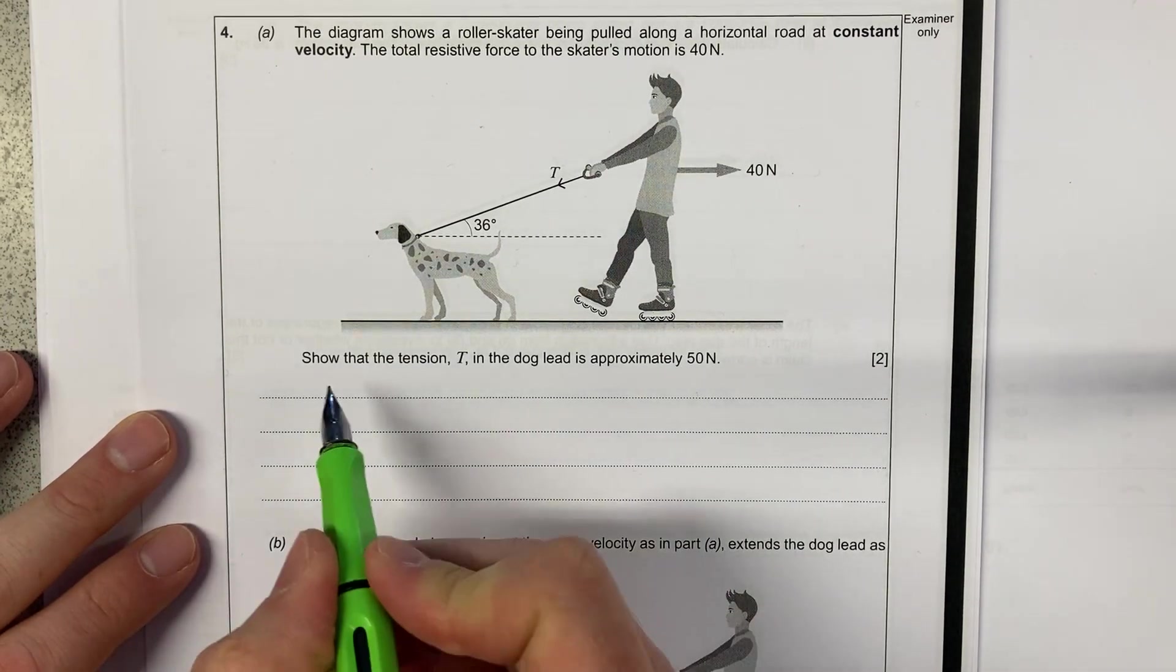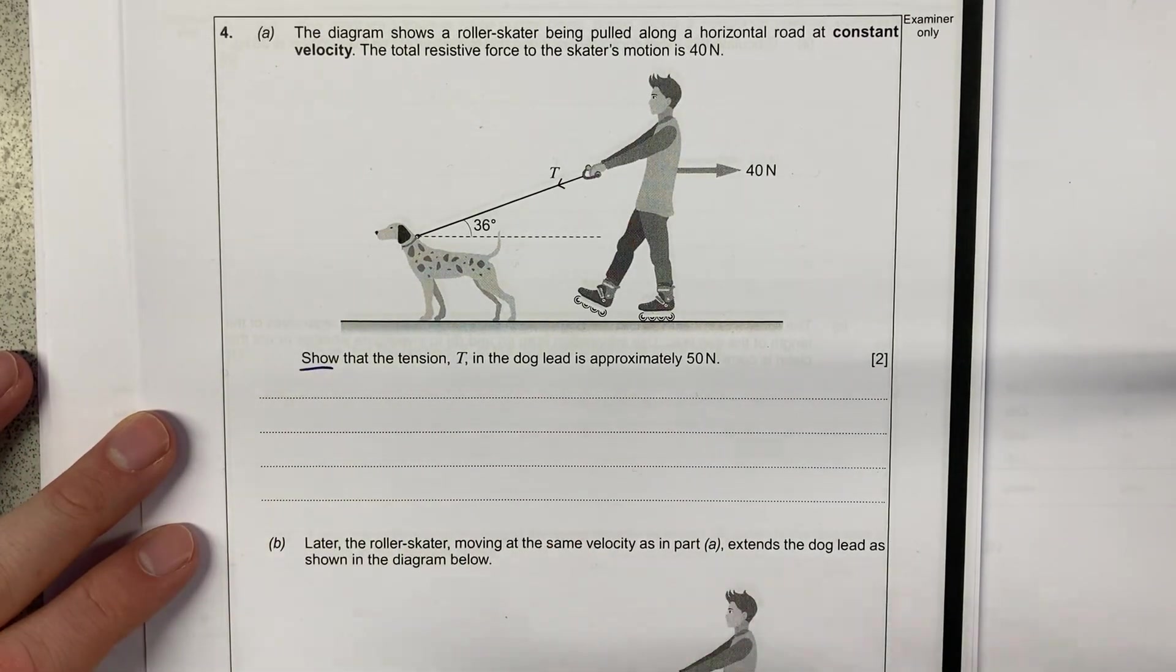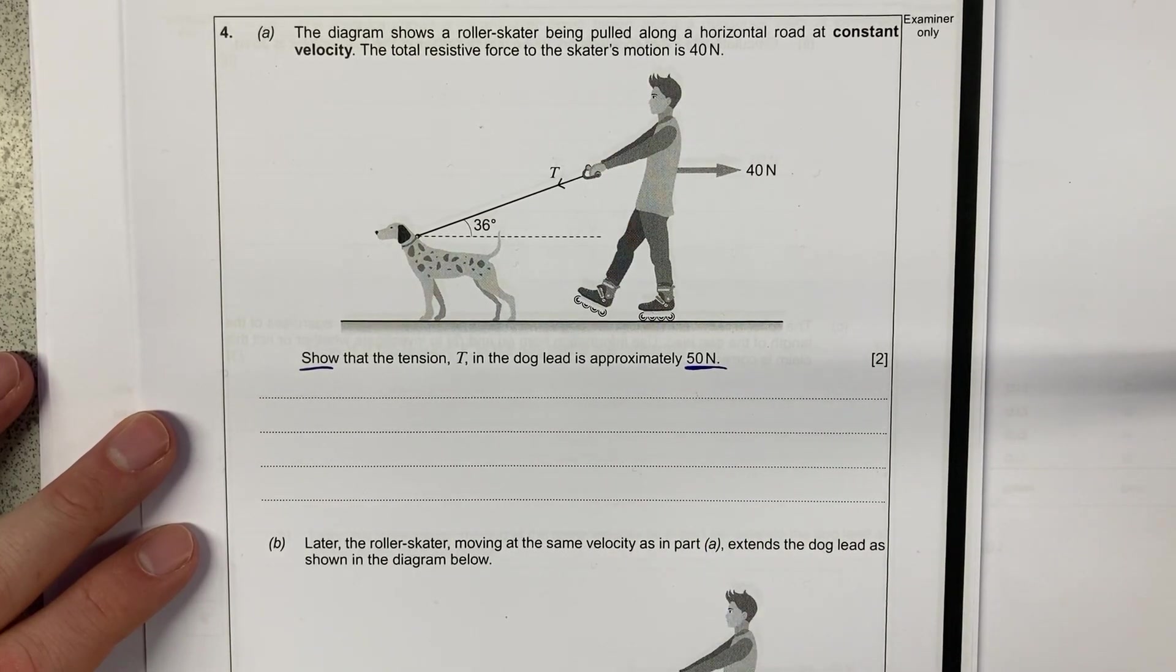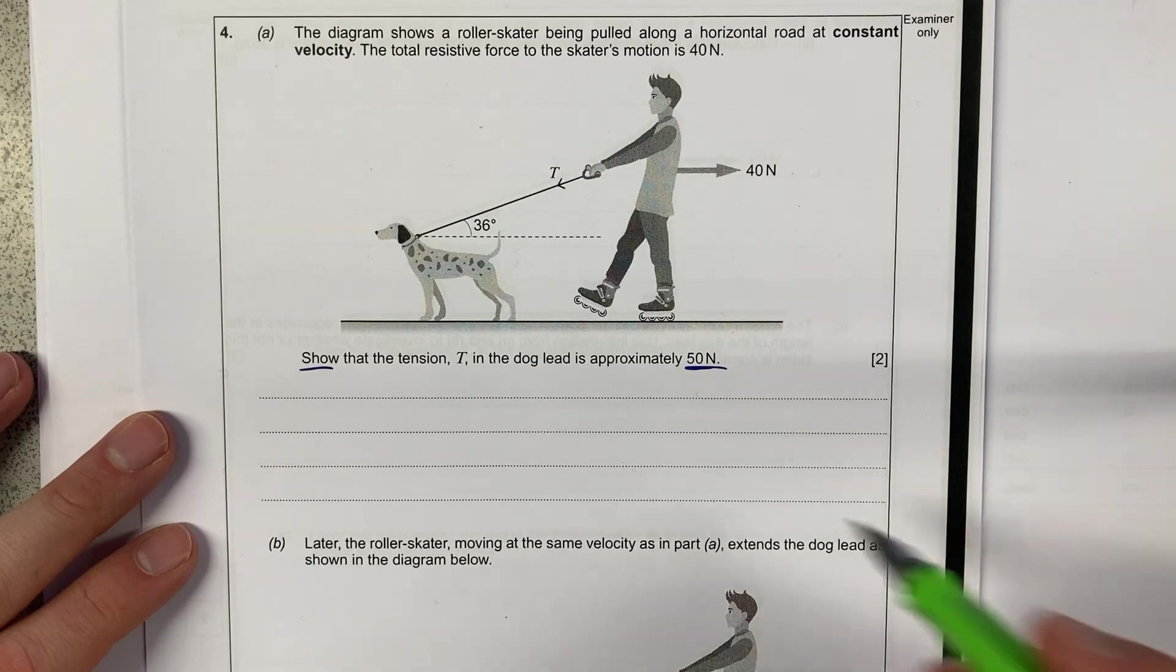So the first thing it wants us to do is a nice show question. This is a significant command word because it tells us that we're probably going to need this answer later on in the question. So they've given it to us just in case we can't get it ourselves so that we can use it later on.